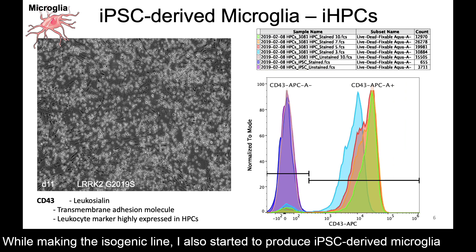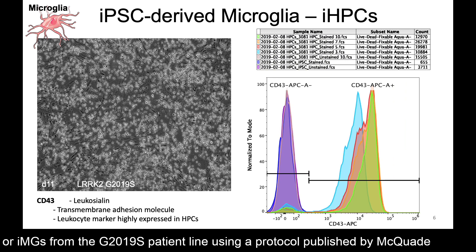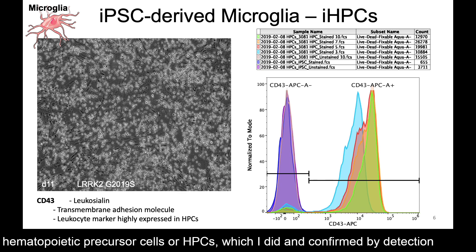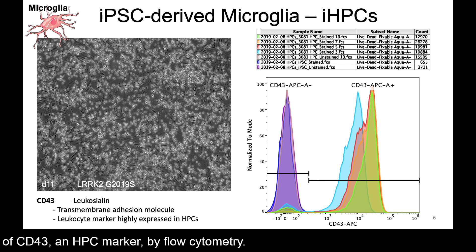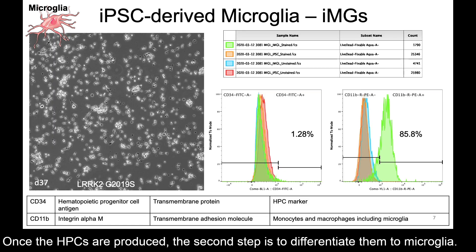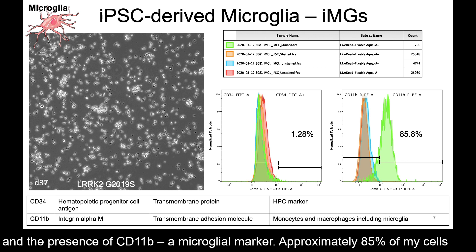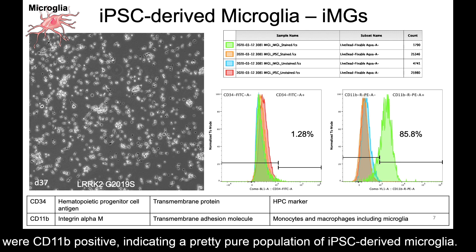While making the isogenic line, I also started to produce iPSC-derived microglia, or iMGs, from the G2019S patient line, using a protocol published by McQuaid and colleagues. It's a two-step process, and the first step is to produce hematopoietic precursor cells, or HPCs, which I did and confirmed by the detection of CD43, an HPC marker, by flow cytometry. Once the HPCs are produced, the second step is to differentiate them into microglia. Here I confirmed the identity of the microglia by the absence of CD34, an additional HPC marker, and the presence of CD11B, a microglial marker. Approximately 85% of my cells were CD11B positive, indicating a pretty pure population of iPSC-derived microglia.